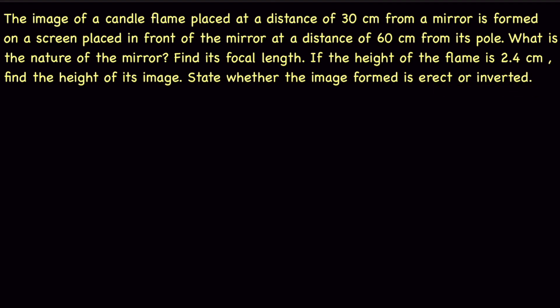In this single question, many sub-questions are present. We need to note a few key points. The candle flame is placed at a distance of 30 centimeters from the mirror, and its image is formed on the screen placed at a distance of 60 centimeters from the pole. When the image is formed on the screen, it means it is a real image.